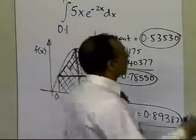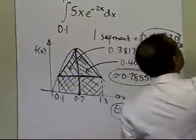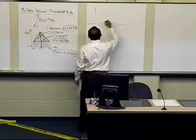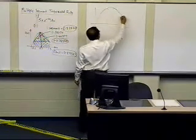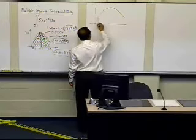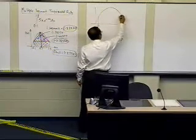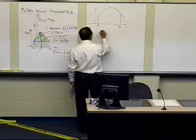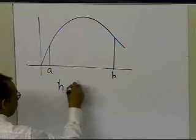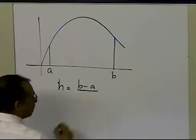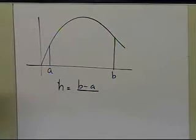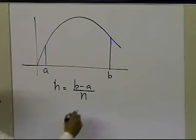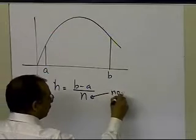So let's go ahead and do that. What the derivation will involve is: suppose you have this function, and you want to integrate any function from point A to point B. You're going to break it up into n equal segments, so you're going to have B minus A, which is the width of the segment, divided by n, where n is the number of segments.